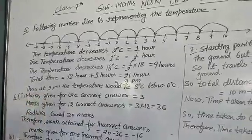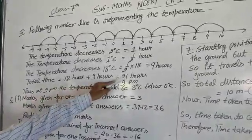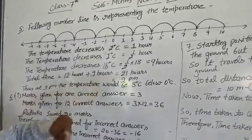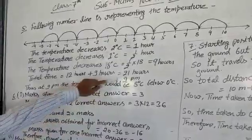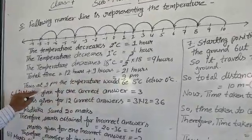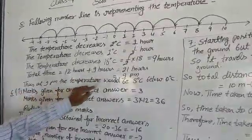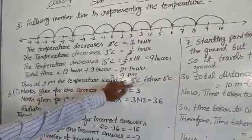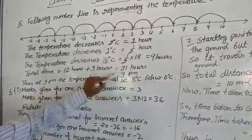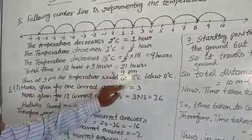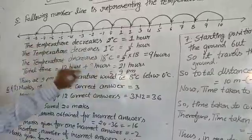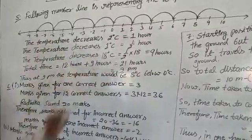Total time: 12 hours plus 9 hours equals 21 hours, meaning 9 PM. So at 9 PM, the temperature would be 8 degrees Celsius below 0, which means minus 8 degrees Celsius — negative. So the answer is 9 PM.